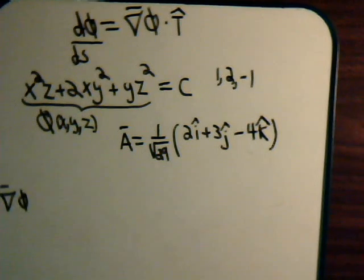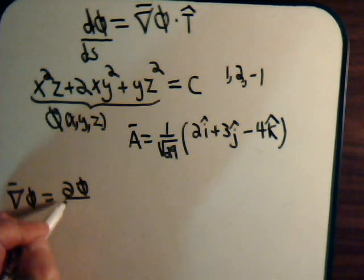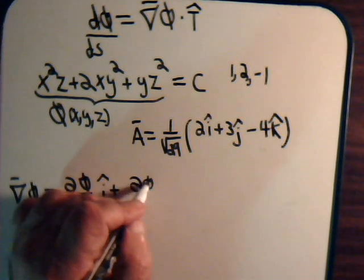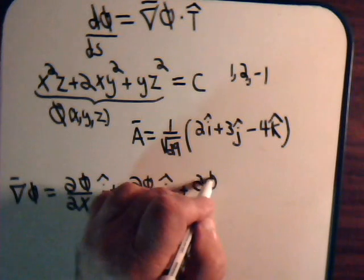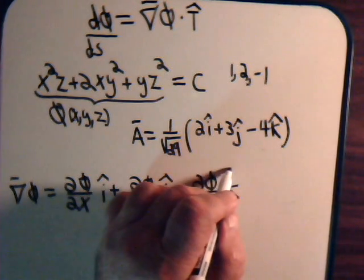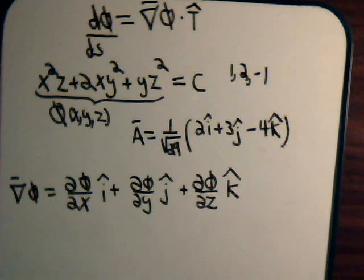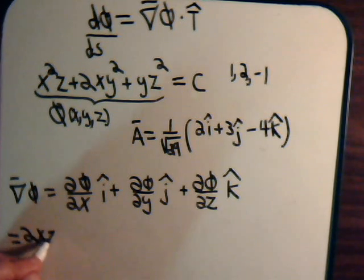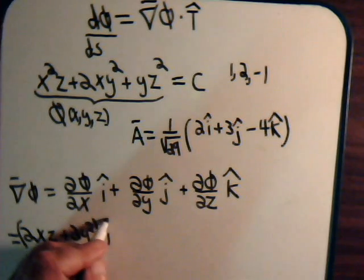Now we have to find the gradient of psi. So that means taking the partial derivative of psi with respect to x times the unit vector i, and take another partial derivative with respect to y times the unit vector j plus our final partial derivative with respect to z times the unit vector k. And this is our scalar here. So taking the partial derivative of this with respect to x, we will have 2xz plus 2y squared times i.